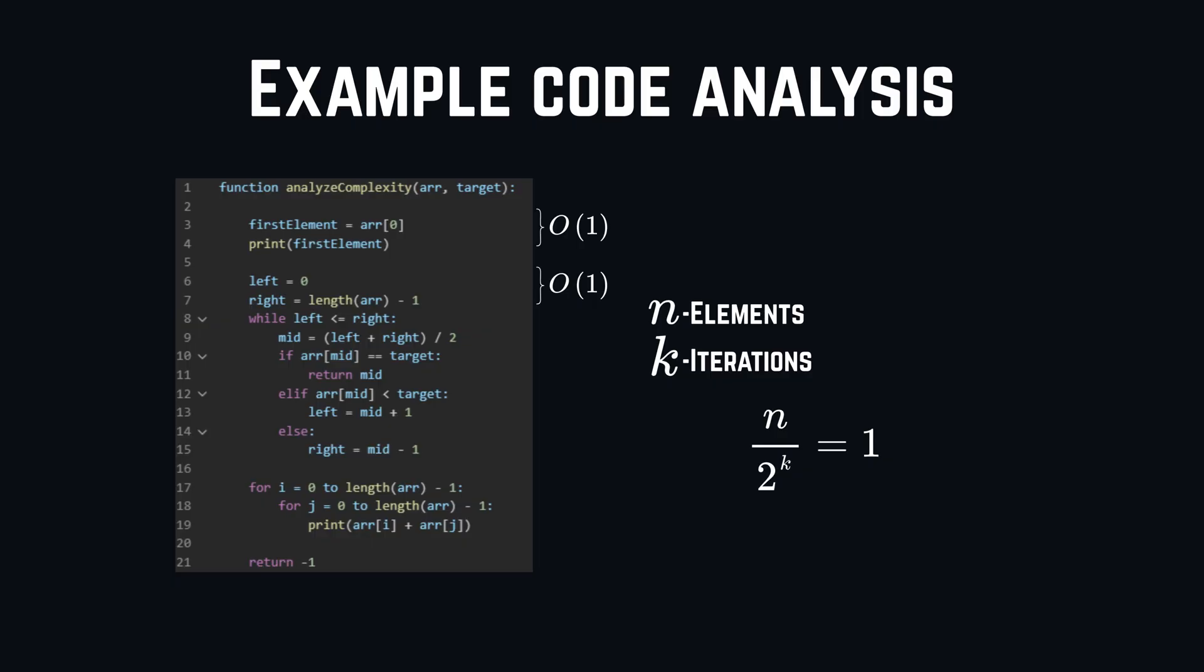So, basically, we have n over 2 to the power of k equals 1. If we would solve this real quick now for k, we would get k equals log base 2 of n. Meaning, after k iterations, we did log base 2 of n operations. So, our while loop has basically a time complexity of O log n.